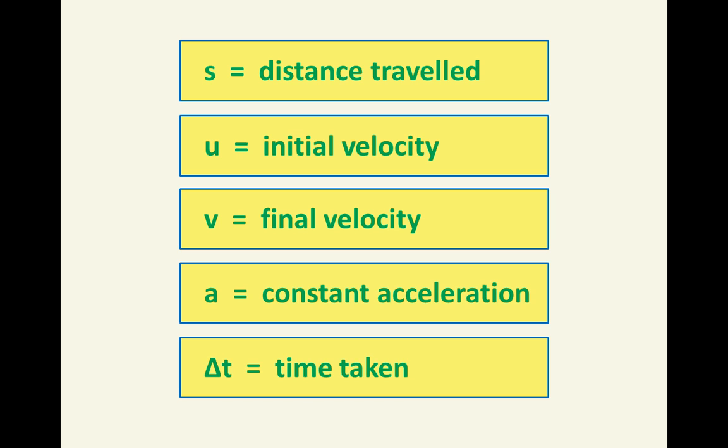s, u, v and a are instantaneous values, but delta t is an interval, a difference between two instantaneous values. Hence the Greek letter delta to represent the change in time.